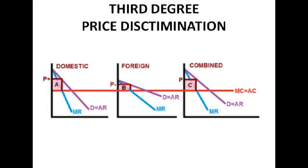Third degree price discrimination is basically all about different countries — the firm charges a different price in different countries. They'll always sell at the point where marginal revenue equals marginal cost. But because demand might be more elastic abroad, it might sell at a lower price abroad. The profit is represented by the shaded area on the diagram.